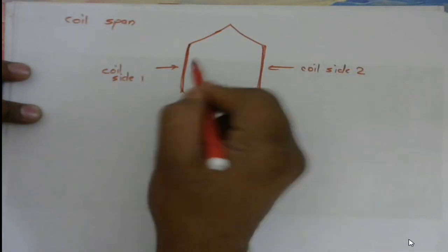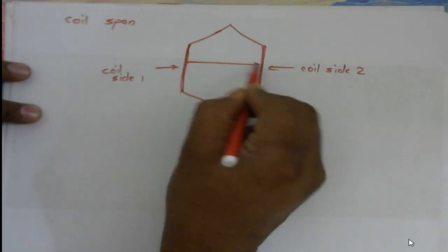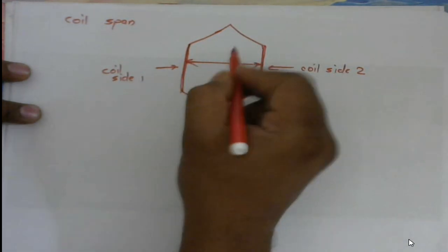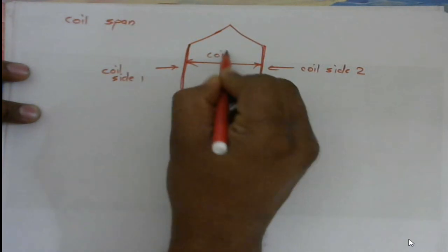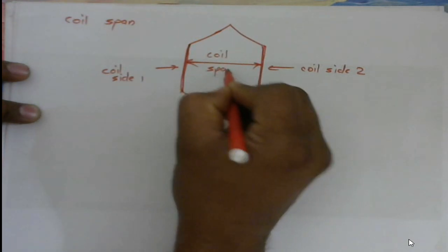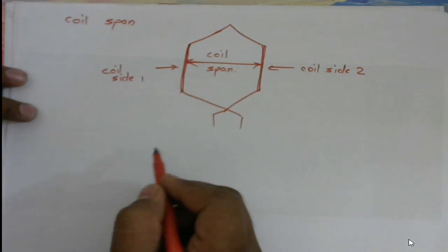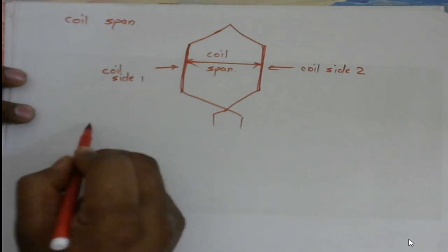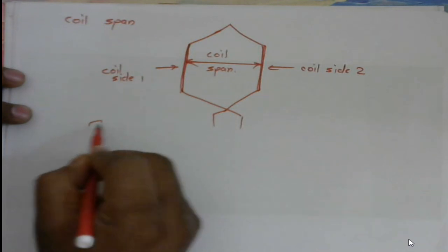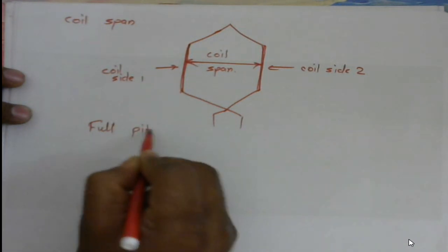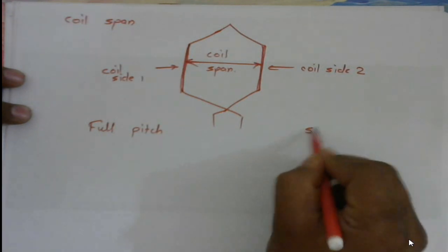So how to define coil span? The distance between two coil sides is called as a coil span. So as per coil span, there are two types of windings: one is a full pitch and second is a short pitch.